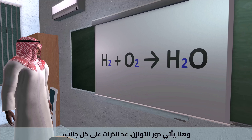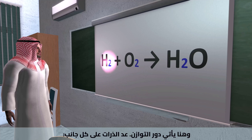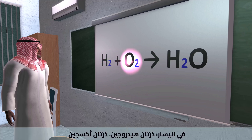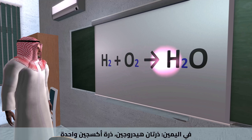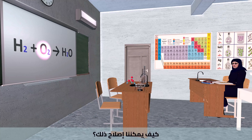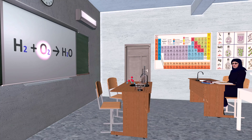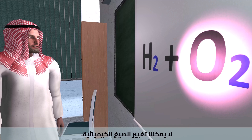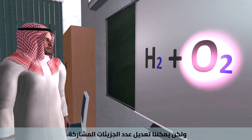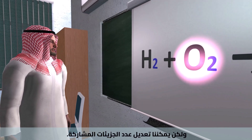Count the atoms on each side. On the left: 2 hydrogen, 2 oxygen. On the right: 2 hydrogen, 1 oxygen. There's an extra oxygen on the left — how do we fix that?